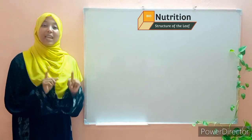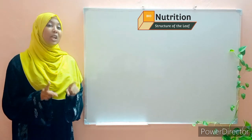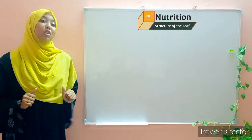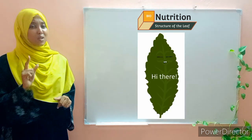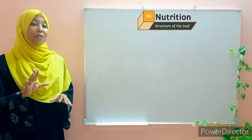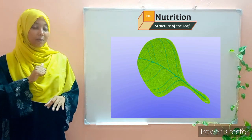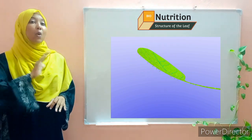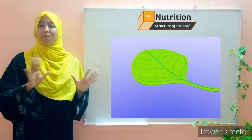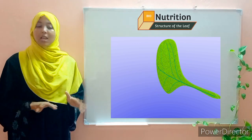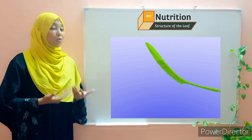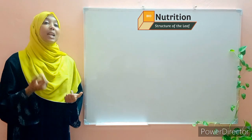Hello and welcome. In our lesson today we are going to discuss the external and internal structure of a leaf. A leaf is a thin flat organ — meaning it contains various tissues. The main function of the leaf is to carry out photosynthesis.